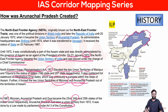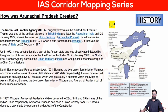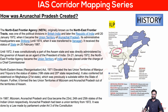The Inner Line Permit (ILP) system: any person entering these states requires permission. There is no functional airport in Arunachal Pradesh, so you enter either through Assam or through Nagaland. Even from an airport, you need an Inner Line Permit — these are typically valid for 7 or 10 days and can be extended. The ILP exists for tribal protection.